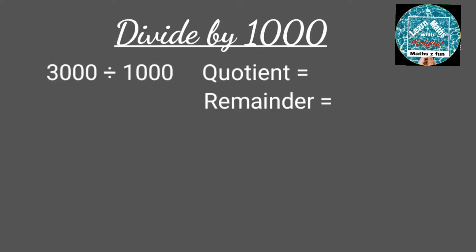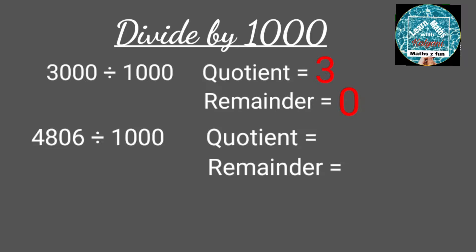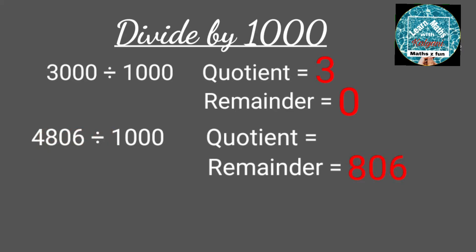When 3000 is divided by 1000, the remainder is 000, that means 0, and the quotient is 3. When 4,806 is divided by 1000, the remainder is 806 and the quotient is 4.